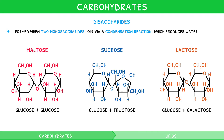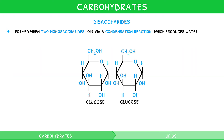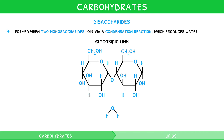For the IB Biology syllabus, you need to be comfortable drawing the formation of maltose from two glucose molecules. Start by drawing two glucose molecules next to one another. The hydroxyl group from one glucose combines with the hydrogen from the adjacent glucose. This forms a glycosidic link and releases water.